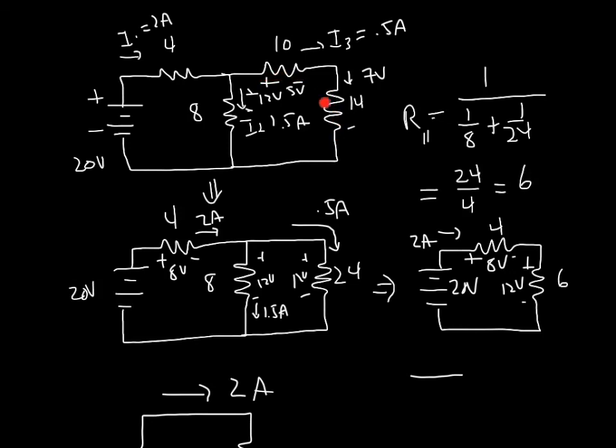5 plus 7 has to add up to 12 in order for the thing to work. So I can start down here, I go up by 12, down by 5, down by 7. That gives me the loop rule around this loop. And the current rule through this junction says that 2 amps is going in. I have half an amp going down this branch of 24 ohms, that means I have to have 1.5 amps going down this branch of 8 ohms.